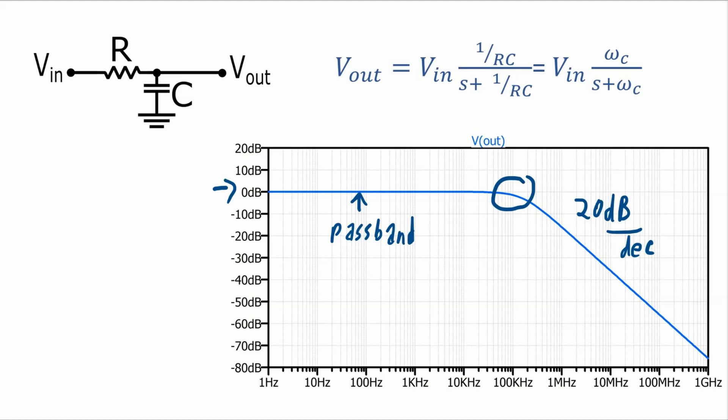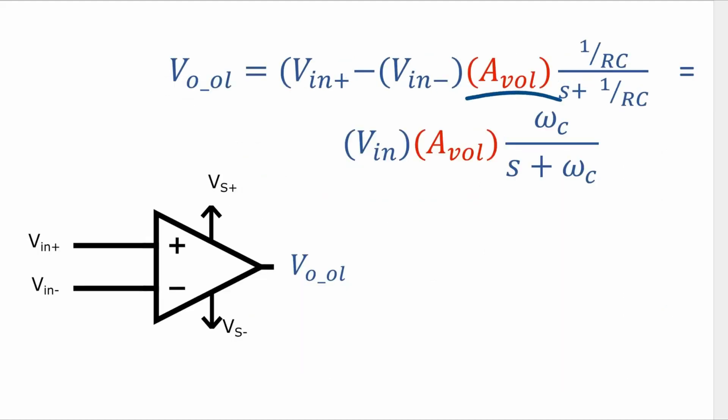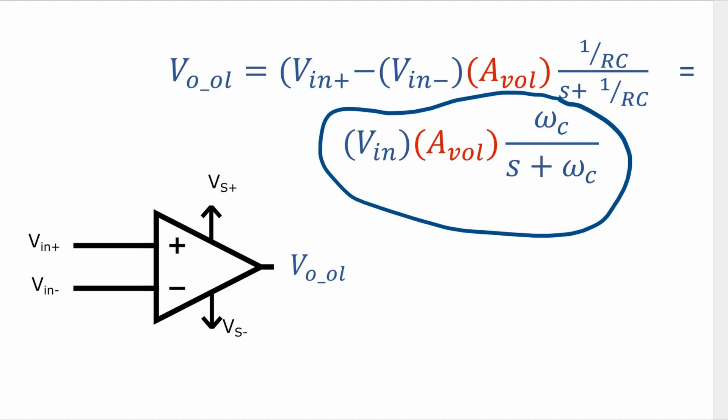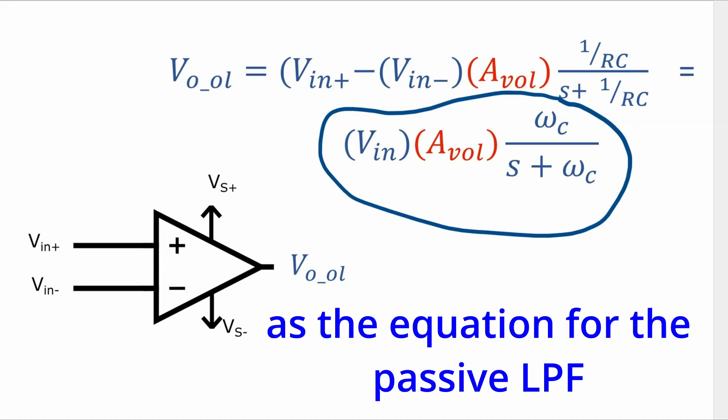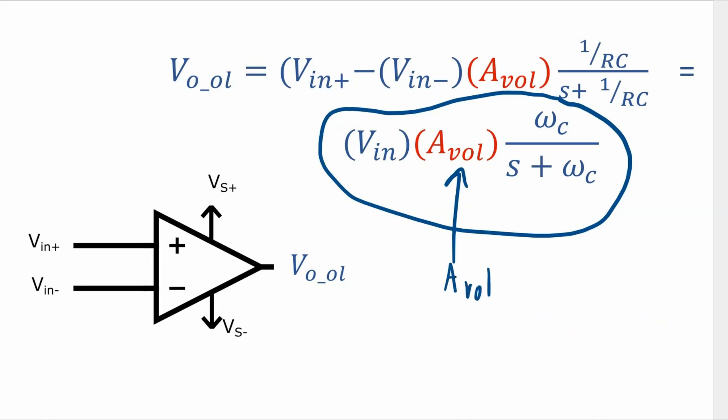A single-pole amplifier circuit has a relationship between Vout and Vin that looks almost the exact same. And since this is an op-amp, this Vin is equal to the voltage at the non-inverting input minus the voltage at the inverting input. This looks almost the same except for this AVOL term — the open-loop voltage gain of the circuit. That's the DC gain constant included in this equation, and it's a big number — anywhere from the tens of thousands to the tens of millions. So basically, an open-loop op-amp is like a low-pass filter but with a large gain.